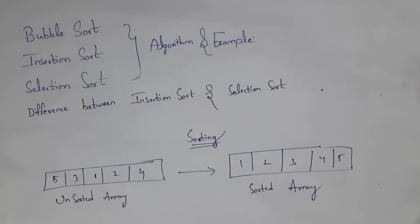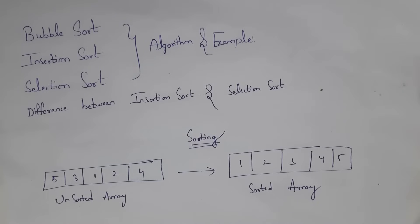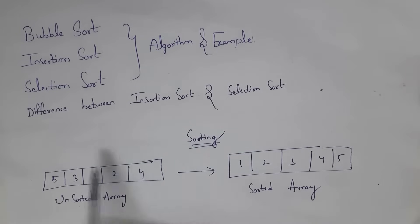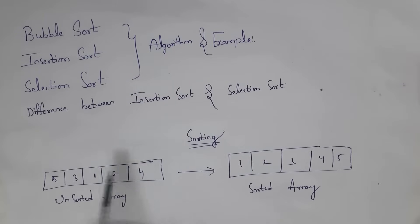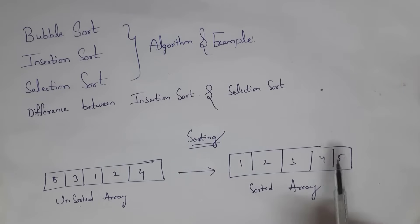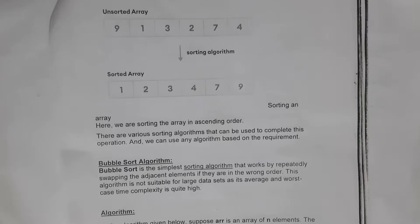Let's get started. First I will explain what is bubble sort, but before that you need to know the meaning of sorting. Sorting is the process of arranging elements either in ascending order or descending order. Here we have an array of elements not arranged in a particular order, so we call it an unsorted array. After arranging elements in ascending order — from small to big — it forms a sorted array.